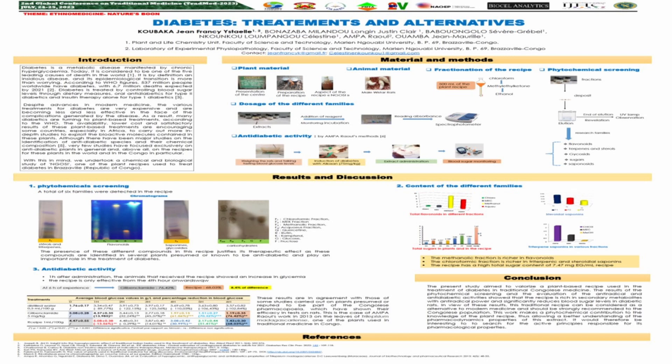Concerning results and discussion: we found six phytochemical families in this recipe, such as sterols and triterpenes, flavonoids, saponins and glycosides, and carbohydrates.